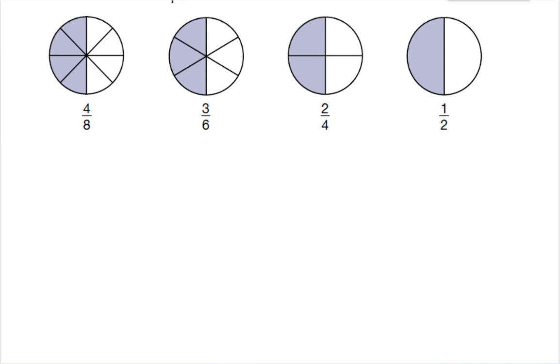So you can see here that I've got all these different fractions: 4 eighths, 3 sixths, 2 fourths, and 1 half. But if you notice, each one illustrates exactly half of a circle. This tells us that we can reduce any of these fractions down to 1 half, and that all of these fractions are equal to each other.